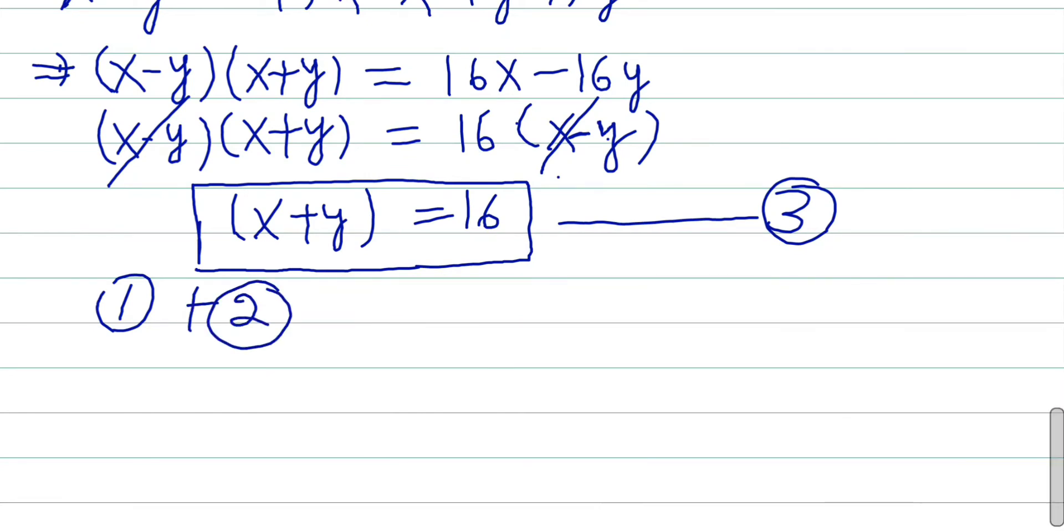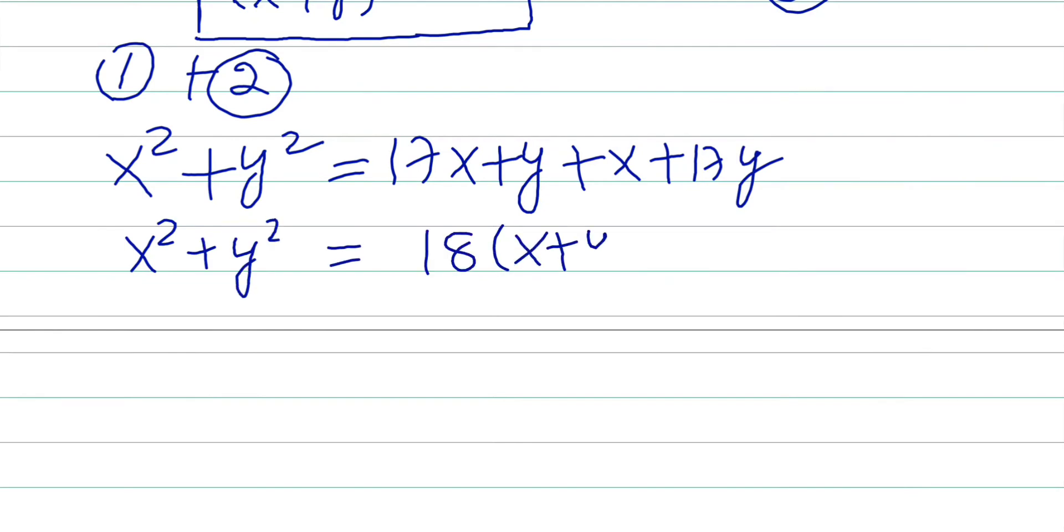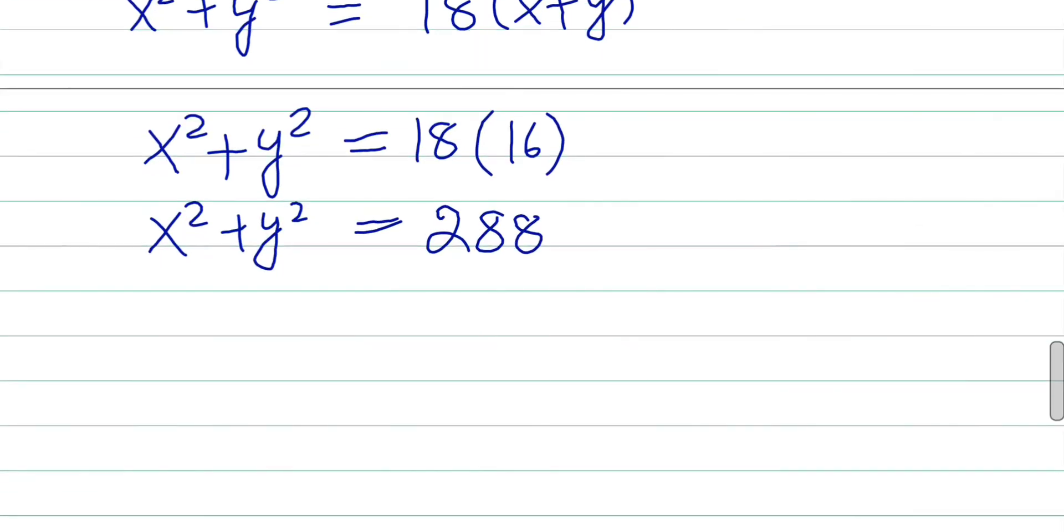So if I add equation 1, x² plus y² will be equals to 17x plus y plus x plus 17y, which is equal to x² plus y² equals 18x plus 18y. And x² plus y² is equal to 18 into 16, so x² plus y² equals 288.